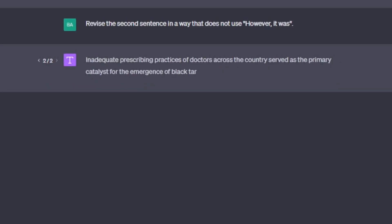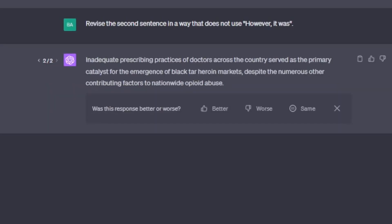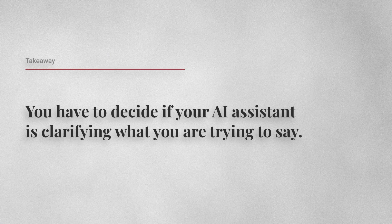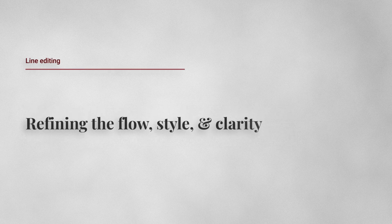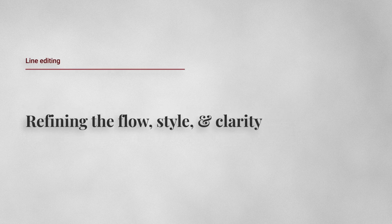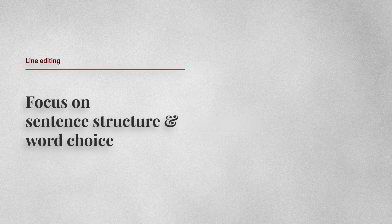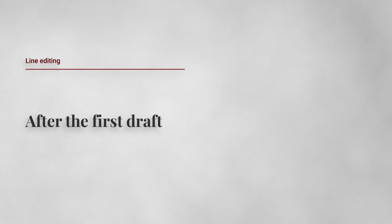Regenerating the response from ChatGPT gives us a more concise sentence. As the writer, you have to decide if your AI assistant is clarifying what you're really trying to say. Line editing is about refining the flow, style, and clarity of your writing. It's where we focus on sentence structure, word choice, and clarity. Line editing takes place after the first draft of your essay.